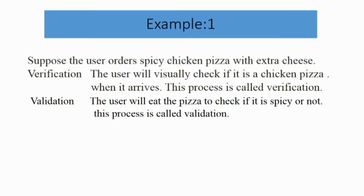Suppose the user orders a spicy chicken pizza with extra cheese. Verification and validation can be performed as follows. Verification: the user will visually check if it is a chicken pizza and if it has extra cheese when it arrives. Validation: the user will eat the pizza to check if it is spicy or not — this process is called validation.